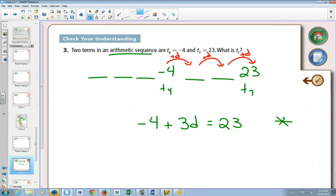So yeah, if I start at negative 4, and I add d three times, I'm going to get to 23. We just made an equation where there's only one thing we don't know. We don't know what d is.